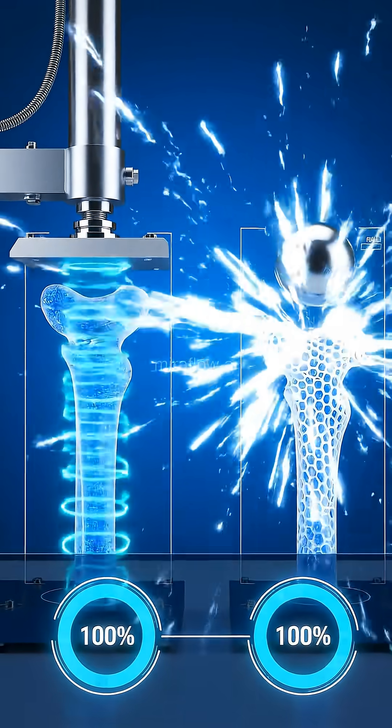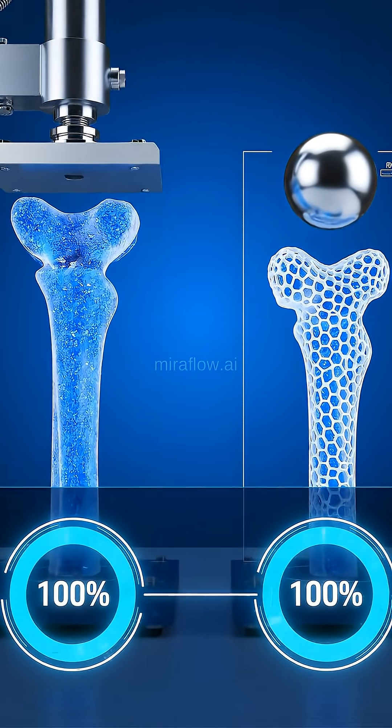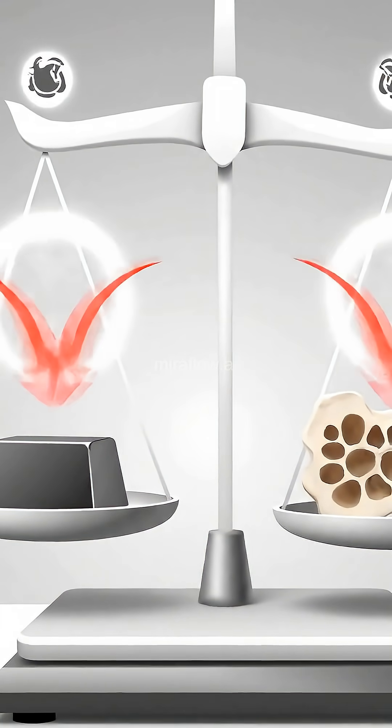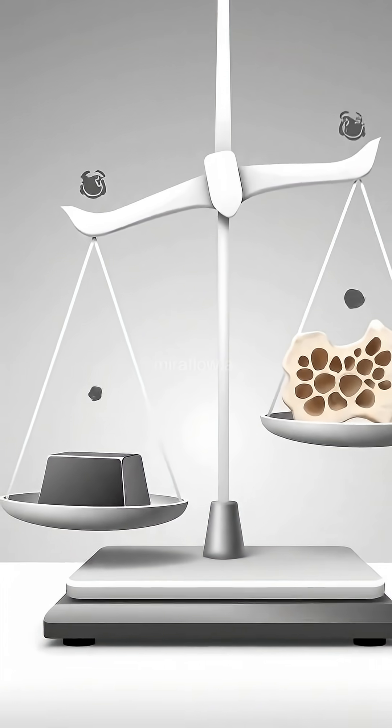Bone is a team effort. Flexible collagen fibers plus hard mineral crystals. The collagen bends a bit, the minerals take the crunch. Together, they handle impacts incredibly well, especially in compression.